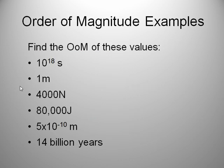Let's practice some here. Let's find the order of magnitude of these values. 10 to the 18th seconds, the order of magnitude is just 18. 1 meter, the order of magnitude is 10 to the 0. 4,000, you might be tempted to say 3, but 10 to the 3.6 is about 4,000, so 3.6 is closer to 4. We would say this is 4 orders of magnitude. 80,000 would be 5. 5 times 10 to the minus 10th, 5 is going to bring it up 1, so that's minus 9, negative 9 order of magnitude. And 14 billion years, that's 10 to the 10th.